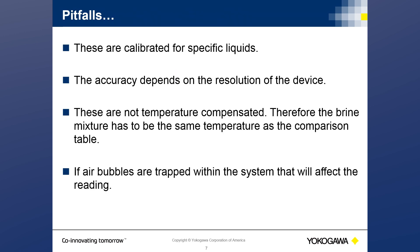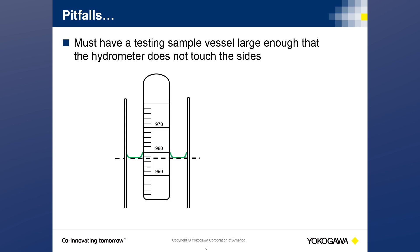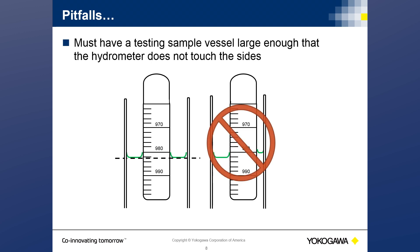Hydrometers are calibrated for different uses, so one must use the correct device for the correct solution. Accuracy depends on the resolution of the device. Hydrometers are not temperature compensated and the measurement is temperature sensitive — the solution must be at the same temperature the device is calibrated to, otherwise errors occur. If air bubbles are trapped, they can cling to the hydrometer causing it to float higher than normal, giving a false reading. The test setup must be level, and the hydrometer must not touch the sides of the vessel.